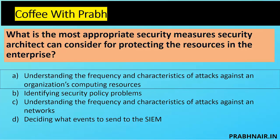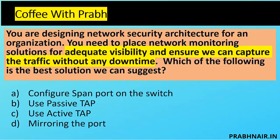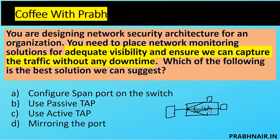You are designing a network security architecture. You need to place a network monitoring solution for adequate visibility and ensure you can capture traffic without any downtime. Option A: configure a SPAN port — basically a switch where one port mirrors other ports, sending one copy of traffic to the monitoring system. But if the switch goes down, everything goes down. So A is removed because we need adequate visibility and capture traffic without any downtime.